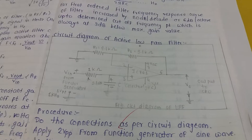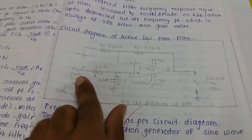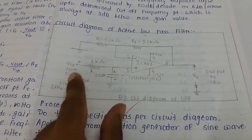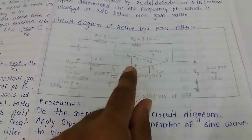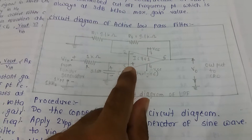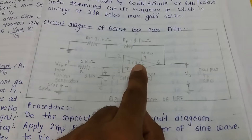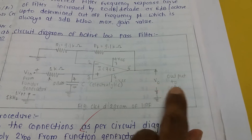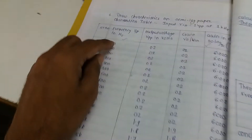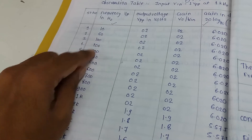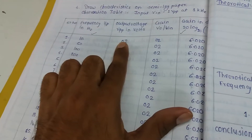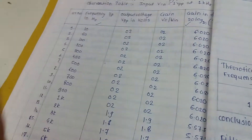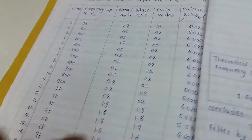The connections are now made as per the circuit diagram. The function generator is the input, connected through a resistor to pin 3 (the plus terminal) of the IC 741. The CRO is the output. When frequency increases, the output voltage decreases.